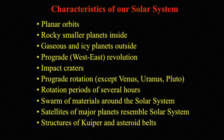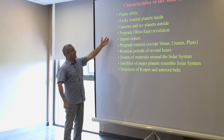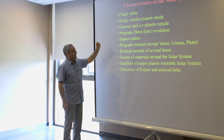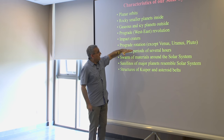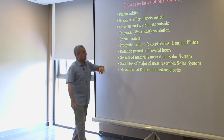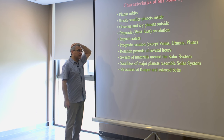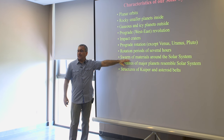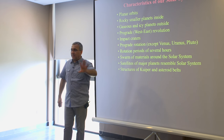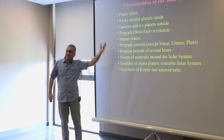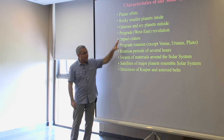If you want to explain solar system formation, you have to explain many properties and characteristics of our solar system: planar orbits, rocky planets in the interior, gaseous planets outside, prograde rotation, impact craters, prograde motion and rotation except for Venus, Uranus, and Pluto, rotation periods of several hours, swarms of material (Oort Cloud and Kuiper Belt objects), how satellites formed, and the structure of the Kuiper Belt and asteroid belt. Your theory has to explain solar system formation as a whole — formation of Earth and Venus, the asteroid belt structure, formation of Jupiter and Saturn, ice giants, and everything together.